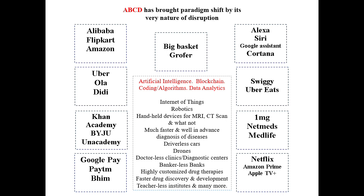Google Pay, Paytm, and BHIM are digital payment examples. Amazon has given Alexa, Apple has given Siri, Google has given Google Assistant, and Cortana is an assistant by Samsung. Swiggy and Uber Eats are engaged in home delivery of food. Online pharmacies, also called e-pharmacies in India, include 1mg, NetMeds, and MedLife. For OTT streaming, we have Netflix, Amazon Prime, and Apple TV+. These are all examples of disruptive innovations.